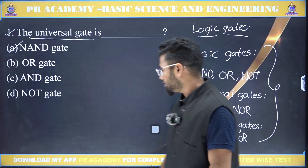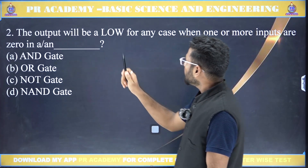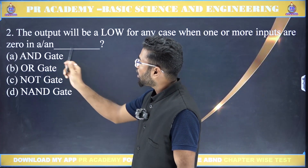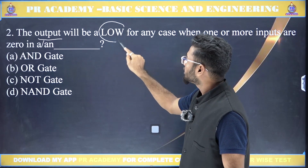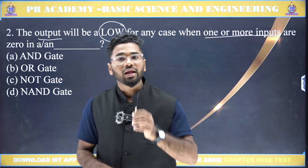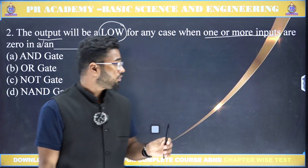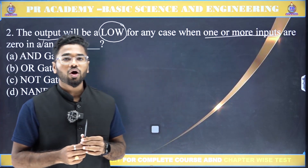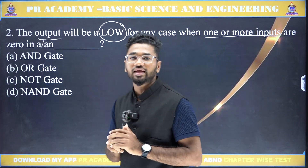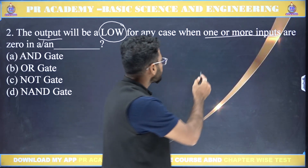Next question: the output will be low for any case when one or more inputs are 0 — in which gate? That means even when one input equals 0, the output must be low. So whenever we make even one input zero, the output should be zero. Let me explain the truth table of the AND gate to give you clarity.